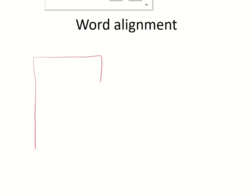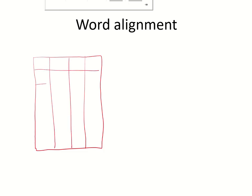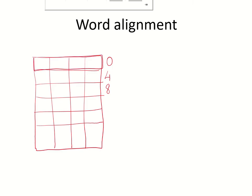Let us see how words are aligned in primary memory. Assuming that the word size is four bytes, this is the RAM. If this is word zero, the next word would start at byte address four, assuming this is a byte-addressable memory, and then the next word would be at byte address eight.